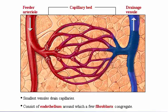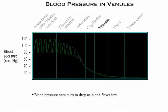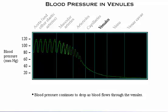In the graph of blood pressures, note that pressure continues to drop as blood flows through the venules, encountering further resistance.